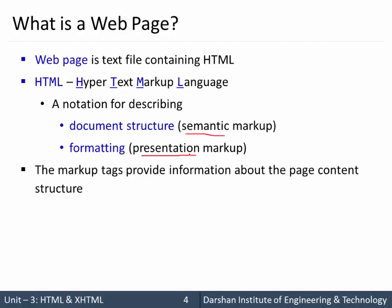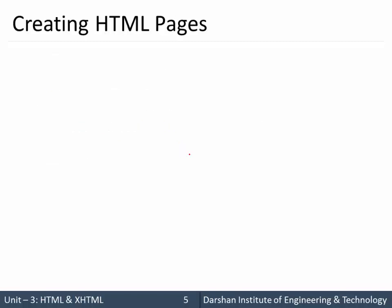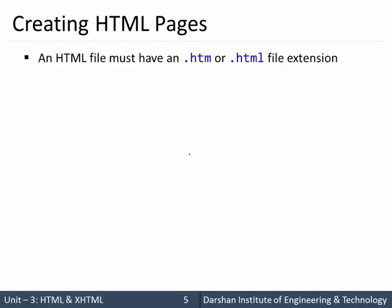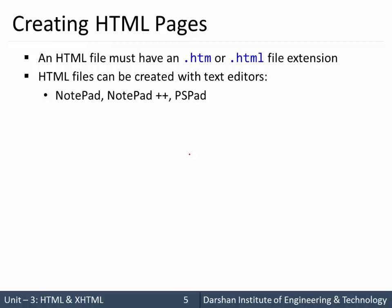Markup tags provide information about the page content structure. HTML files must be saved with a .htm or .html file extension. HTML files can be created using text editors like Notepad, Notepad++, PSPed, or Sublime editor. We are going to use Sublime text editor in this series.